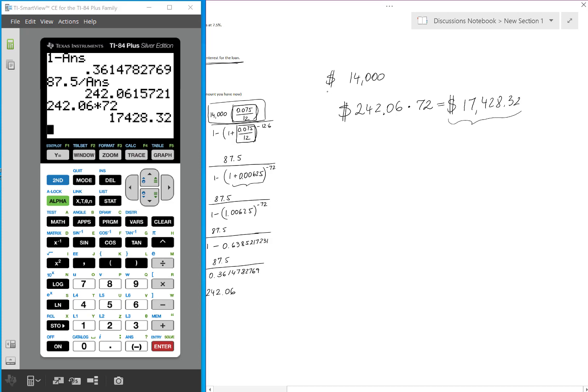So this is the amount of money you end up paying out of pocket in 6 years. But you borrowed 14,000. So the interest is the amount of money that you paid, 17,428.32, minus the 14,000 that you borrowed. So 3,428.32 is the amount of money that you had to pay in interest.